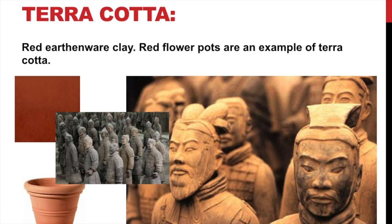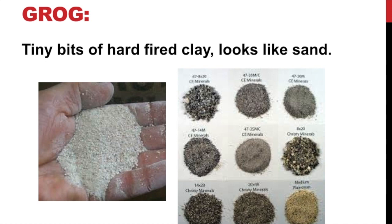Terracotta is another type of earthenware clay — it's red. If you've ever seen red flower pots, that's terracotta. You may have heard of the terracotta warriors in China — you can see the example on screen. They made all of that out of clay, which was a massive undertaking. It's a kind of red clay; we've used it before and it shapes really well, though it does get you dirty.